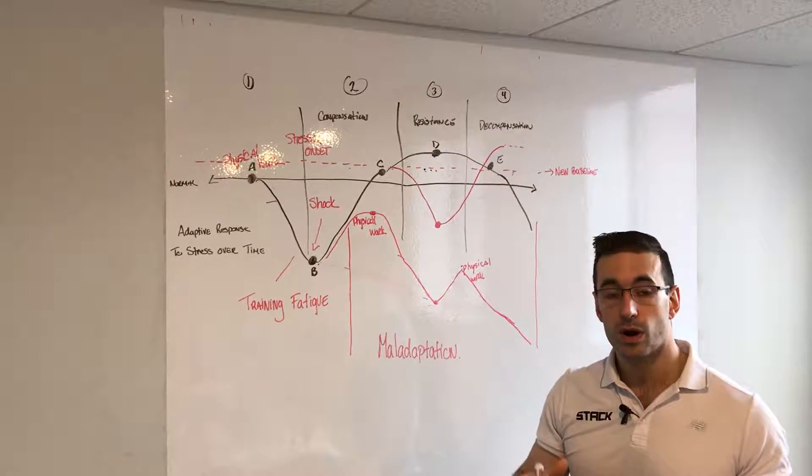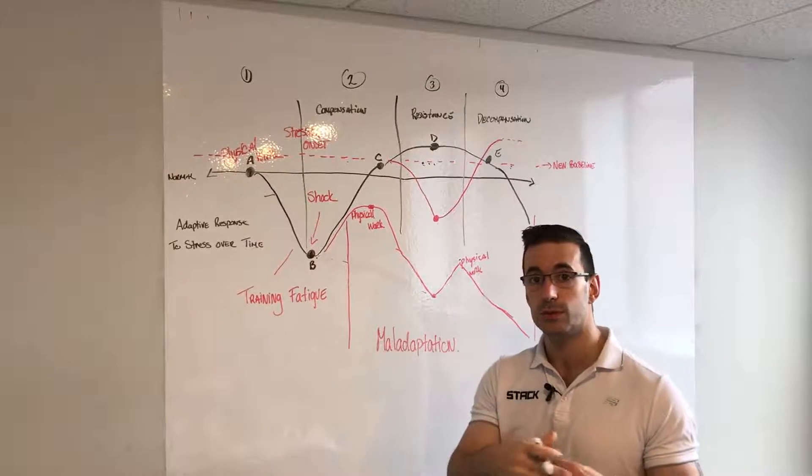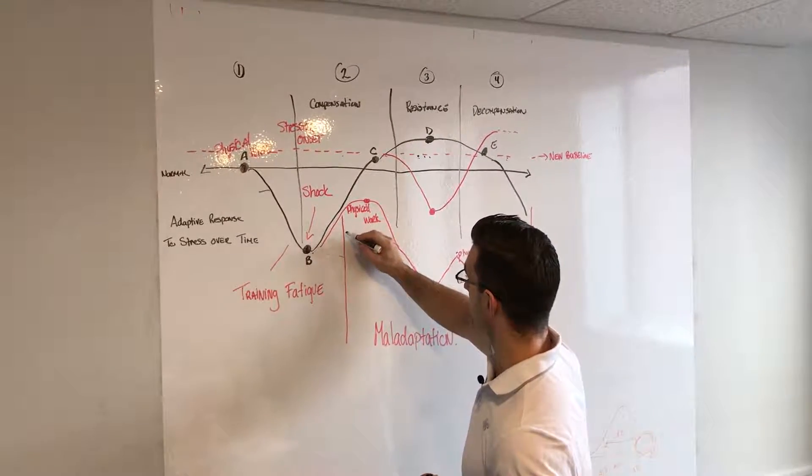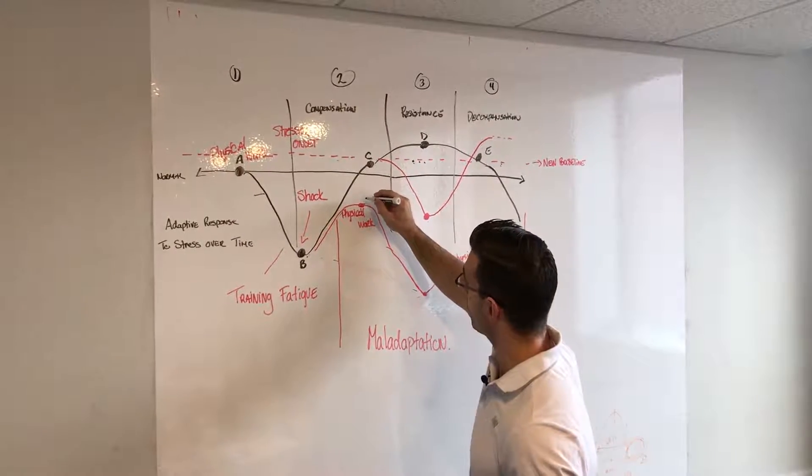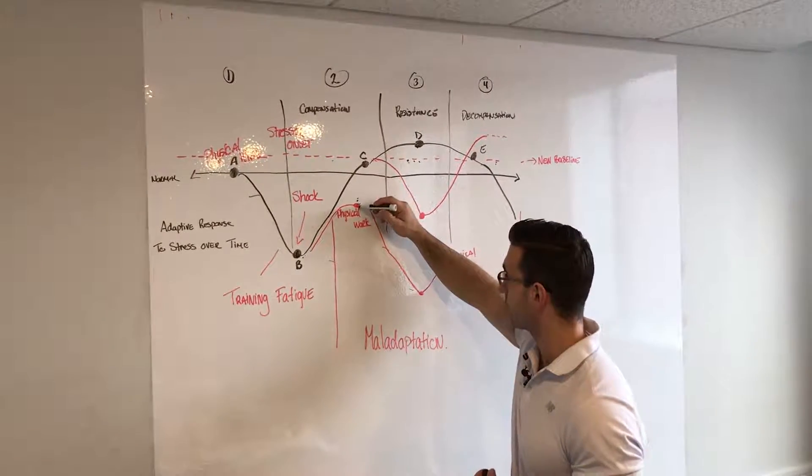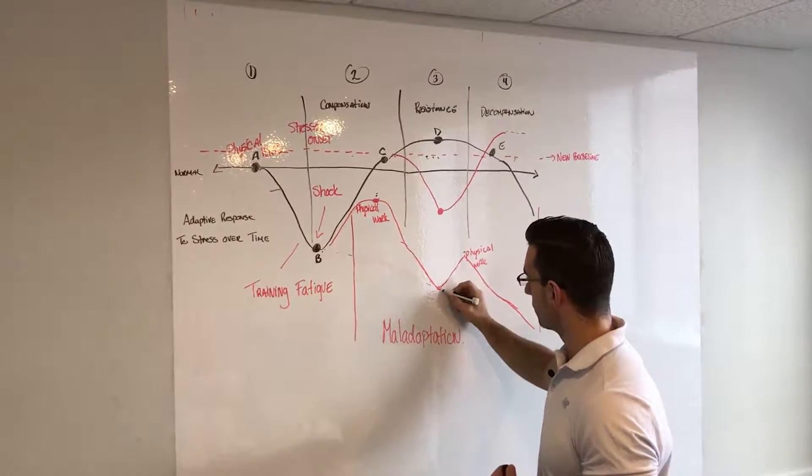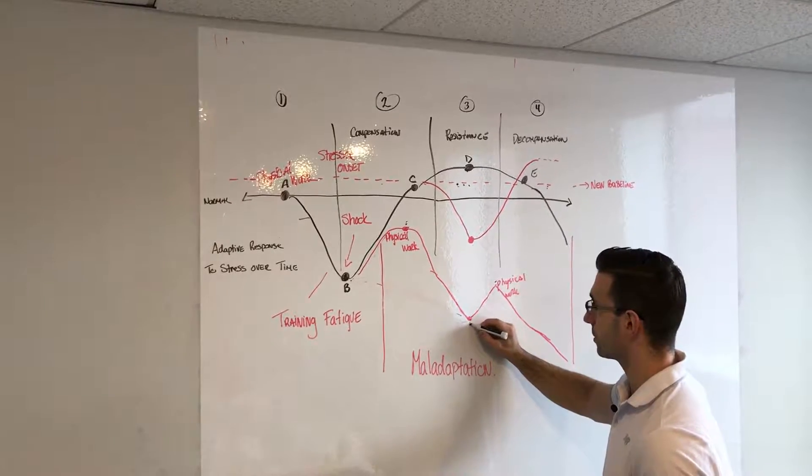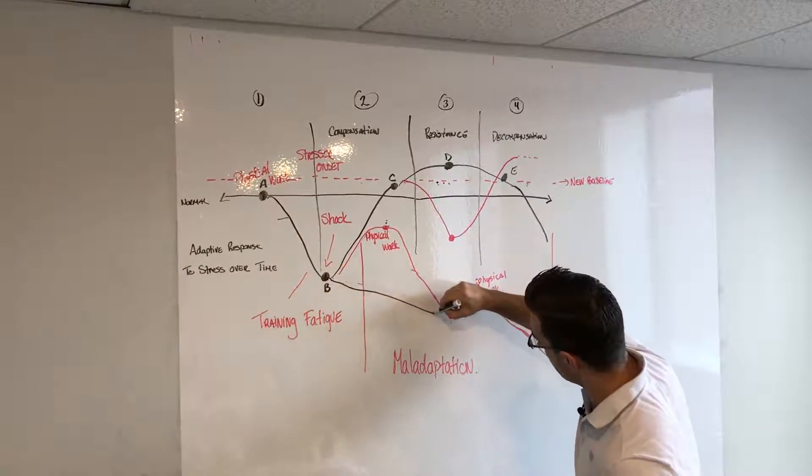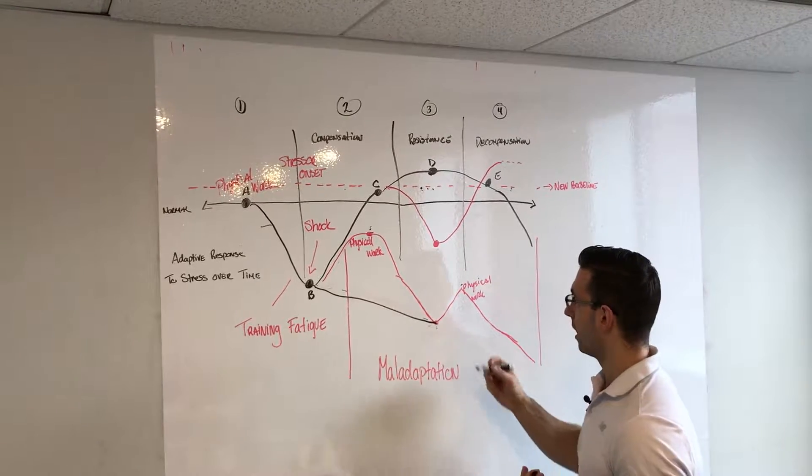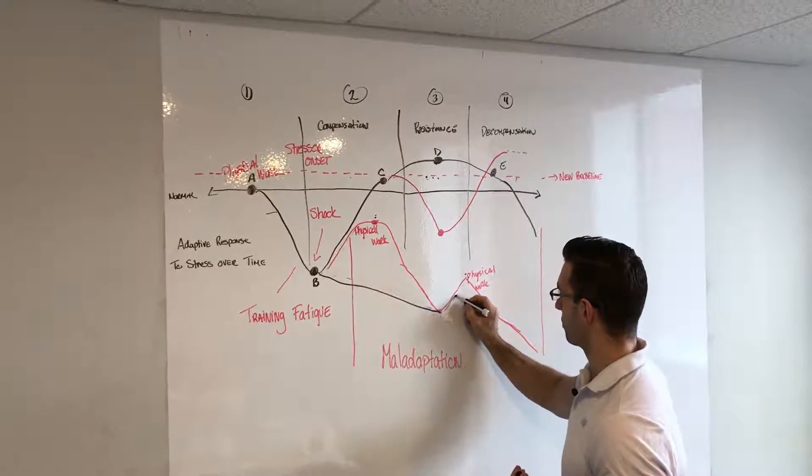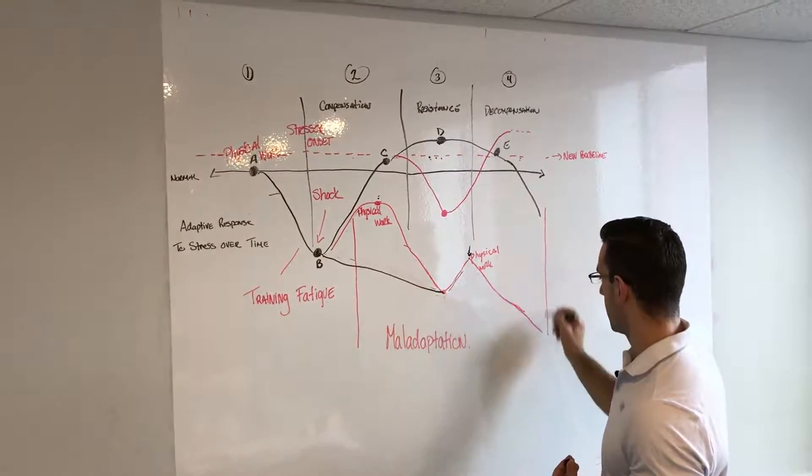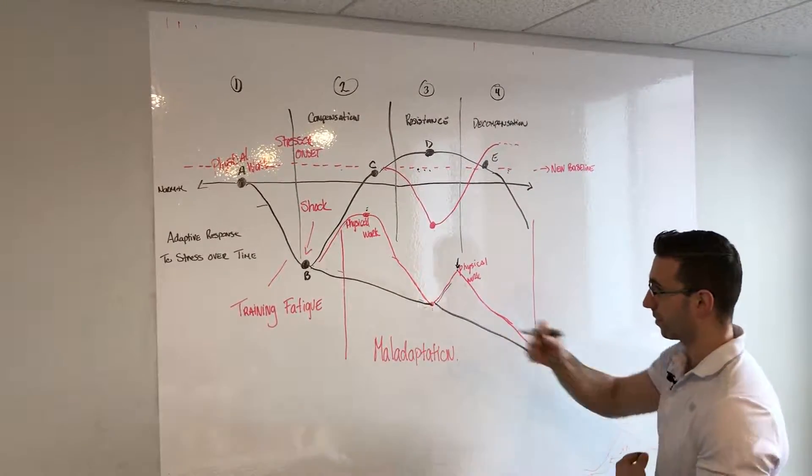Now what could potentially happen is if you do not balance fatigue and recovery, then during the resistance phase we start going up here and have another training session here. We do physical work, get through the shock and alarm phase, and see a decrease in performance which is lower than before. As we go through the resistance phases again, we have another training session and this will just trend and go on. You can see how that happens.